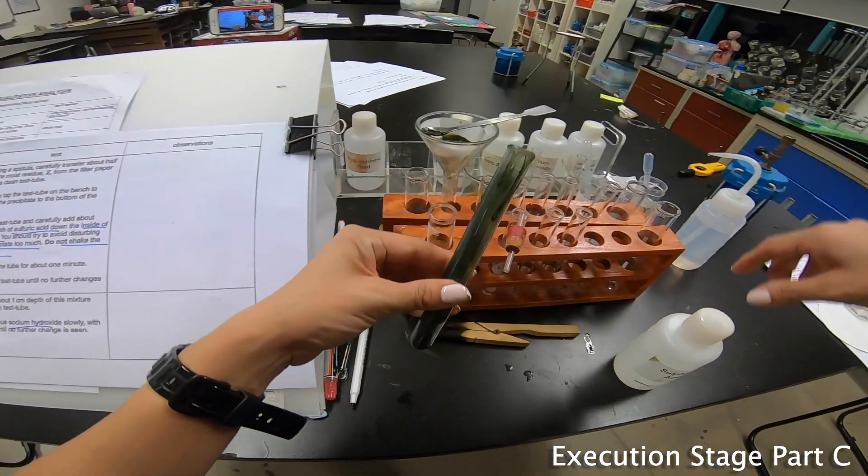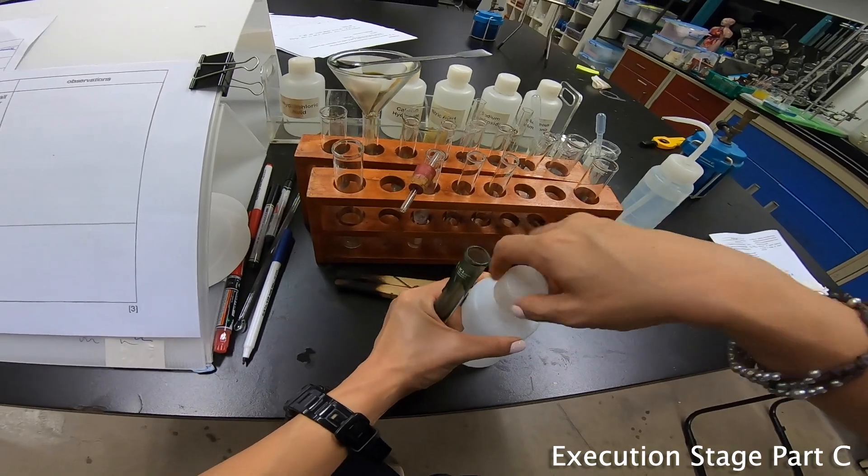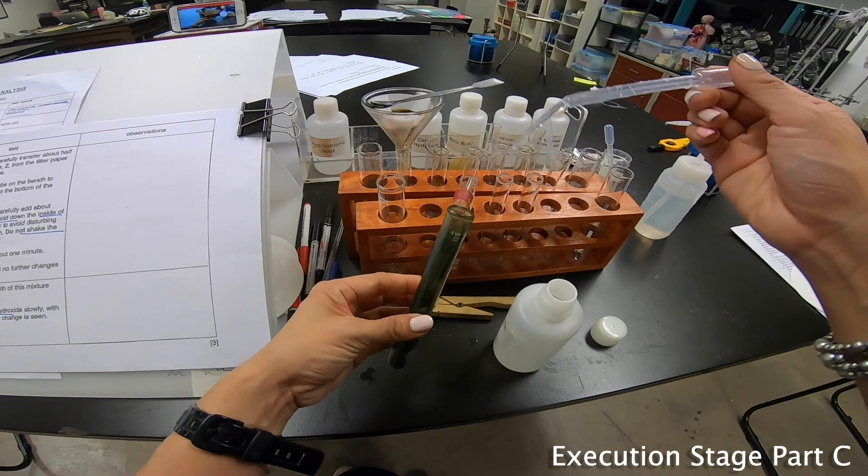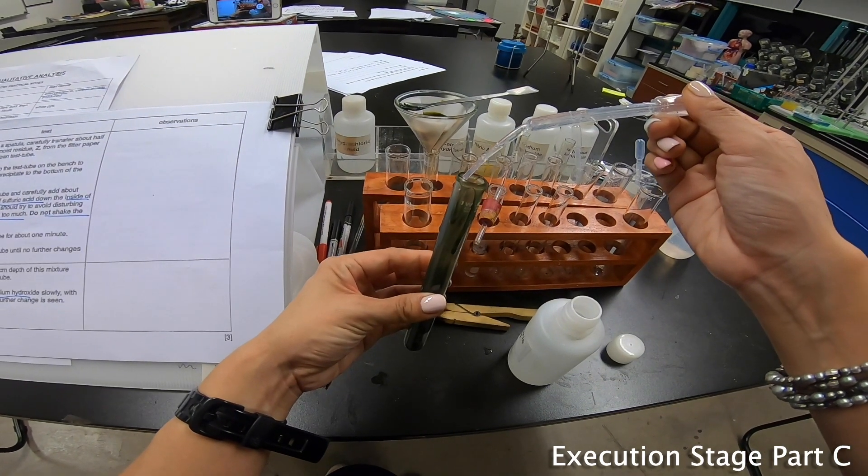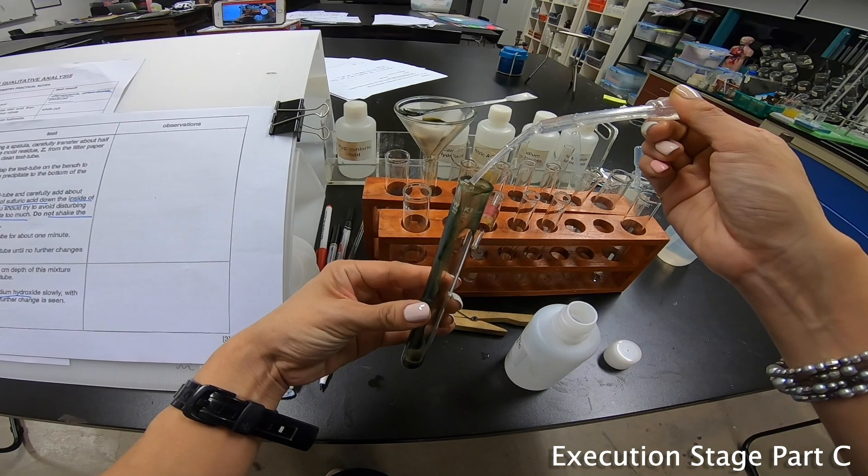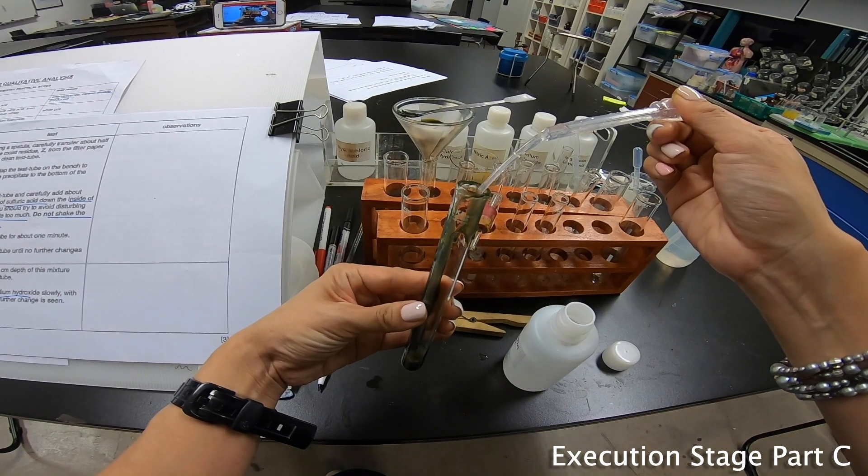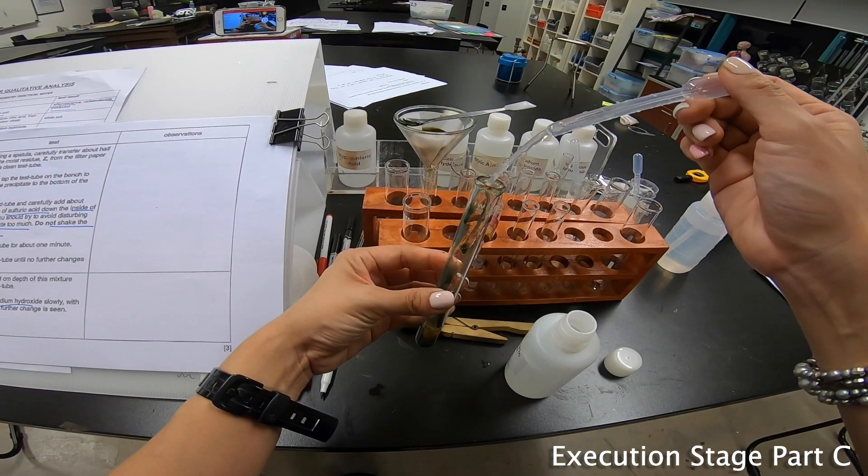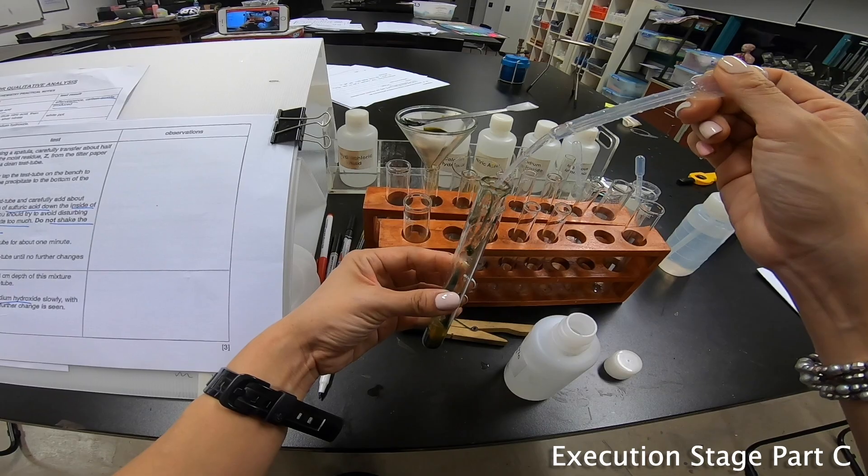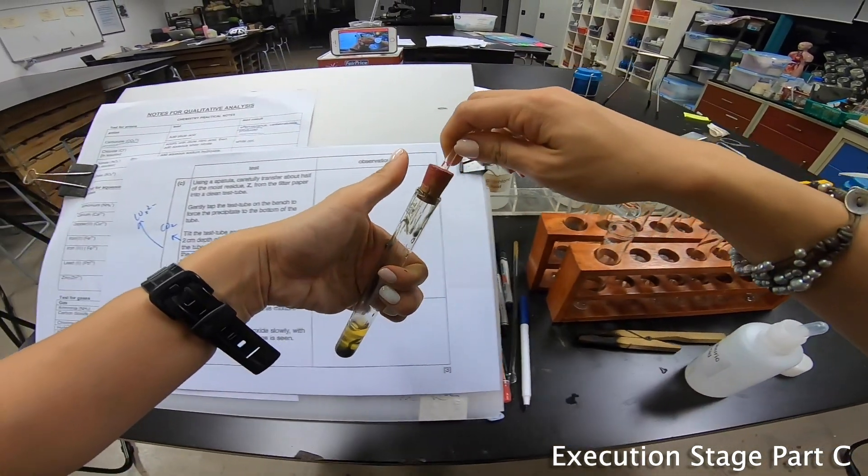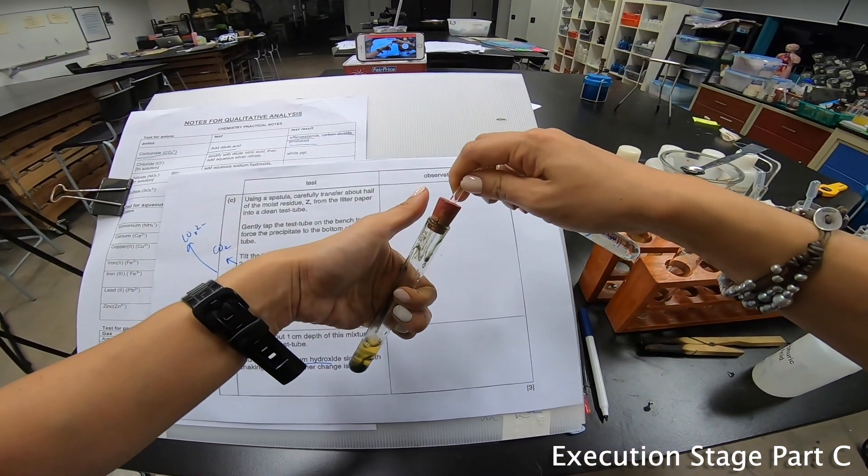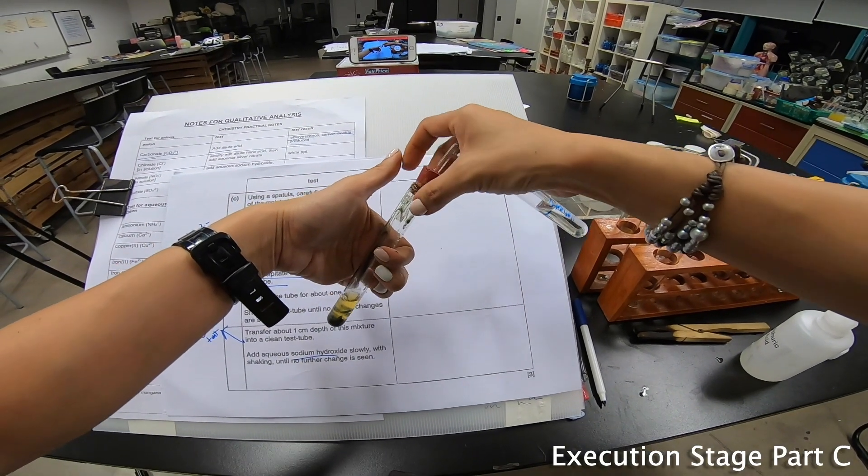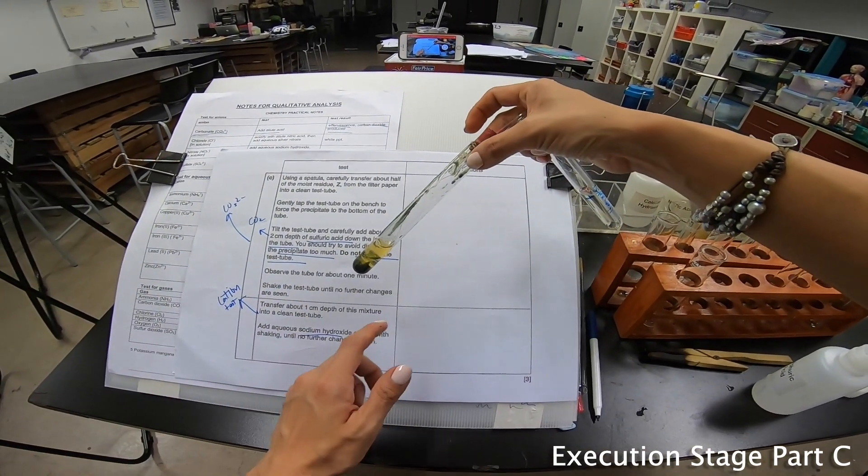Now I'm supposed to add my sulfuric acid down the inside of the test tube. Basically I think they wanted to wash it down. I see gas forming. Bubble through the lime water. But they say do not shake the test tube, so I'm not shaking it.